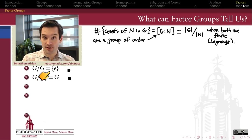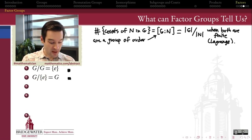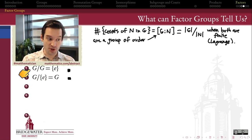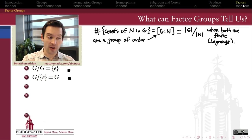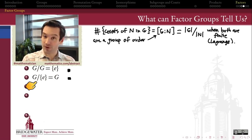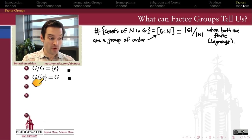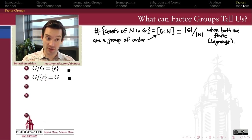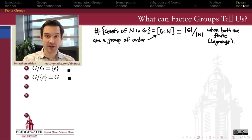So the first two facts always true about factor groups: when I take the quotient of a group by itself — G mod G — I always get a trivial group. Conversely, if I take the quotient of the group G with the trivial subgroup, I always get a factor group which is isomorphic to G itself. So it's the intermediate cases that get more interesting.